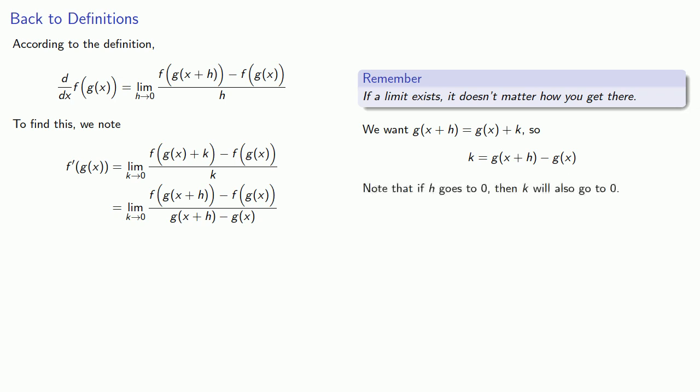And so the thing to note is that since we defined k the way that we did, if h goes to zero, then k will also go to zero. And so if a limit exists, it has to exist whether we let k go to zero or h go to zero. So I can rewrite this in terms of h.